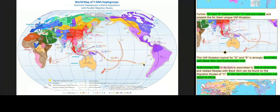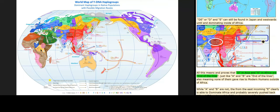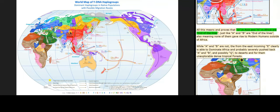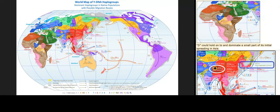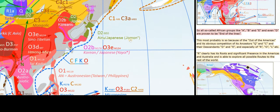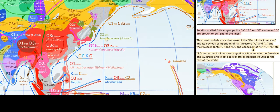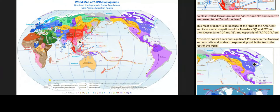D and E can still be found in Japan and westwards until and dominating inside of Africa. All this means and proves that D in Asia and E in Africa are end of the lines, just like A and B are end of the lines — meaning none of them gave rise to modern humans outside of Africa. While A and B are not, the from-the-east incoming E clearly is able to dominate Africa and probably severely pushed back A and B, and possibly Q, to deserts and for them unexplorable dense tropical forests. D could hold on to and dominate a small part of its initial spreading in Asia. So all so-called African groups — A, B, E and even D — are proven to be end of the lines. This most probably is so because of the out-of-the-Americas competition from ancestors Q and C and their descendants D and E, and especially R, O, L, etc.